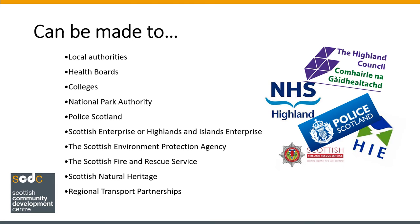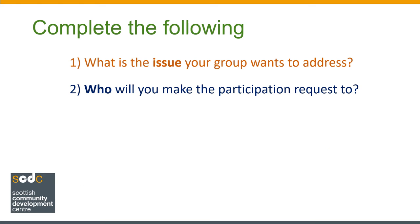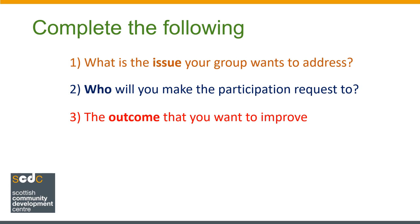If you can't see the authority responsible for the service you want improved, or don't know which authority is responsible, have a look at the SCDC participation request resource pack, which has a guide to identifying which public service authority to make a participation request to. The next step in our exercise is to identify the outcome that you want to improve. You can find a guide to outcomes in the resource pack.